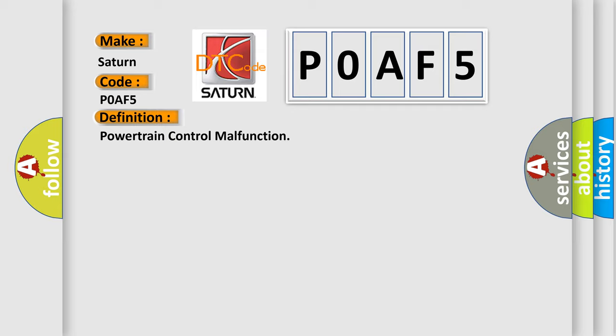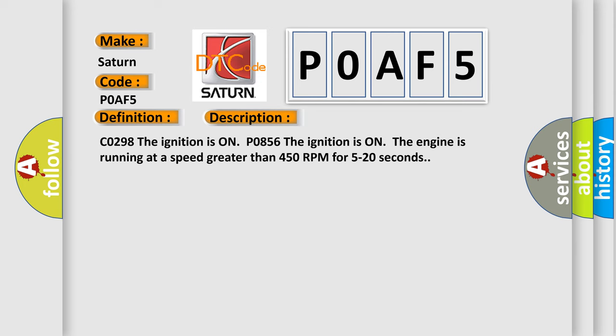C0298: The ignition is on. P0856: The ignition is on, the engine is running at a speed greater than 450 RPM for 5 to 20 seconds.